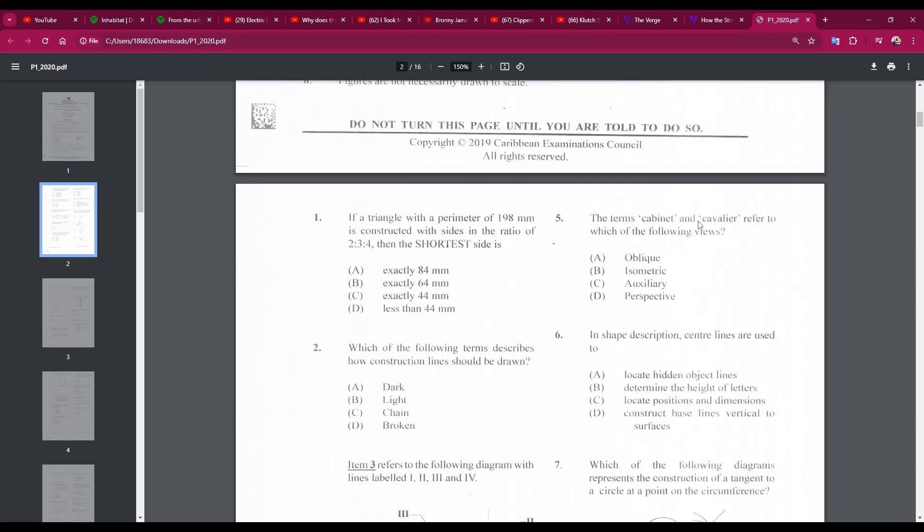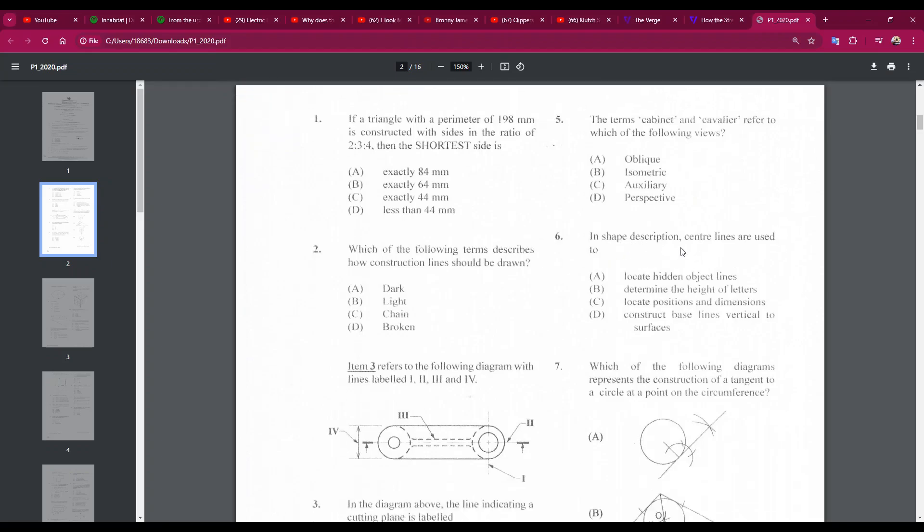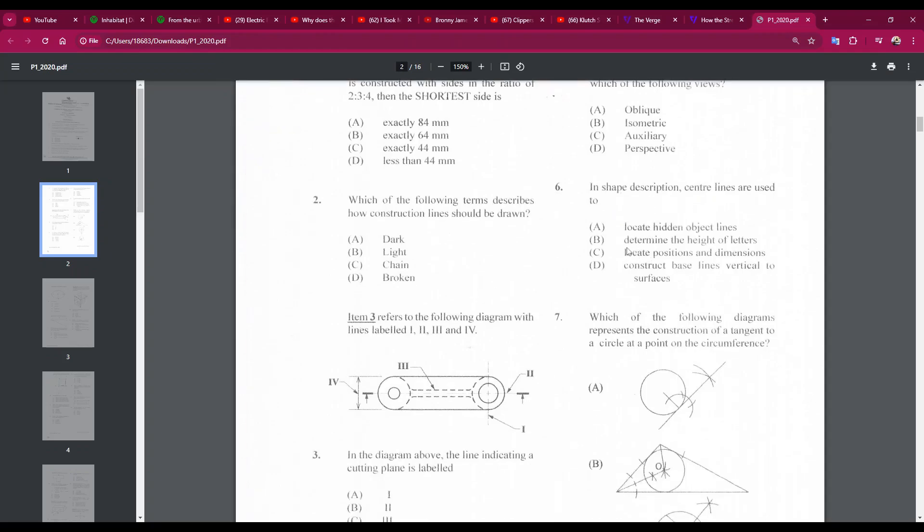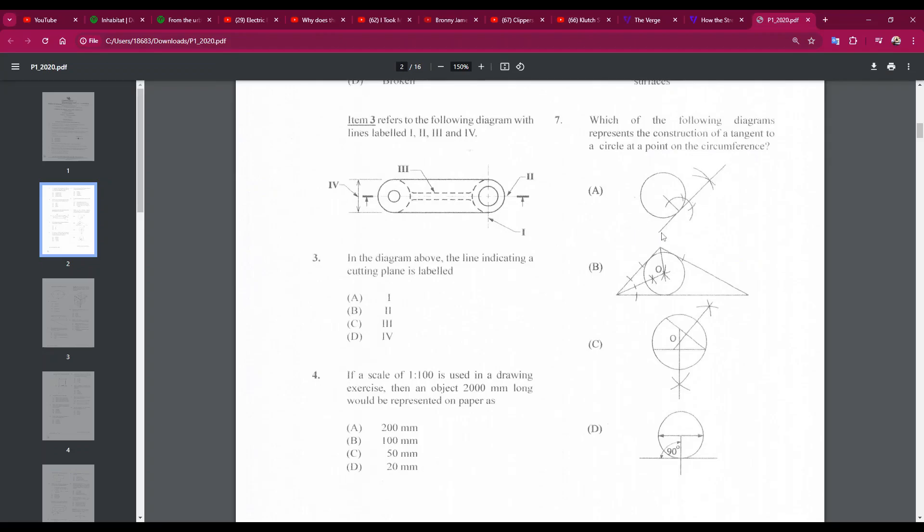Number five: the terms cabinet and cavalier refer to which of the following views? The answer is A, oblique. Right, cabinet drawings you draw the receding lines half length, and in cavalier you draw them full length. In shape description, center lines are used to... the answer is C, locate positions and the dimensions. Number six, C. Number seven: which of the following diagrams represents the construction of a tangent to a circle at a point on the circumference? The answer is A. This is the construction of a tangent on a point.